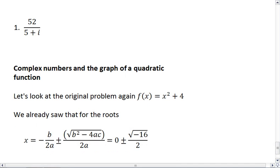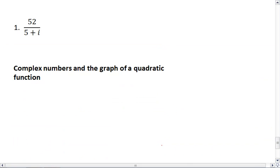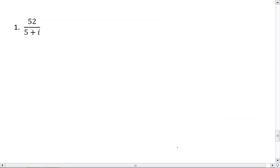For problem 3, we have 52 over 5 plus i. If our denominator is 5 plus i, then the complex conjugate is 5 minus i.